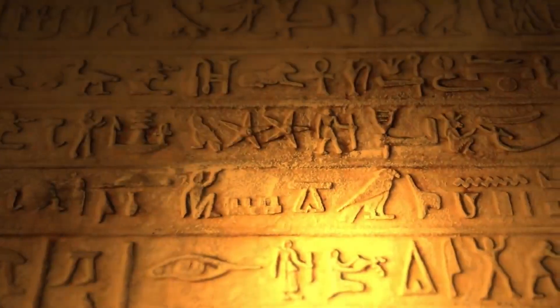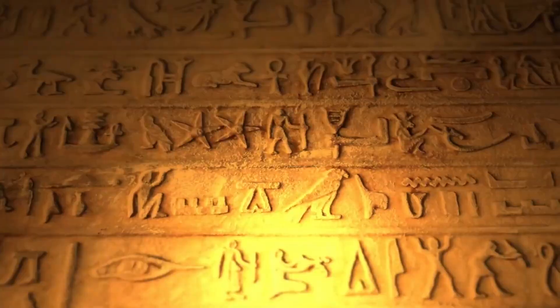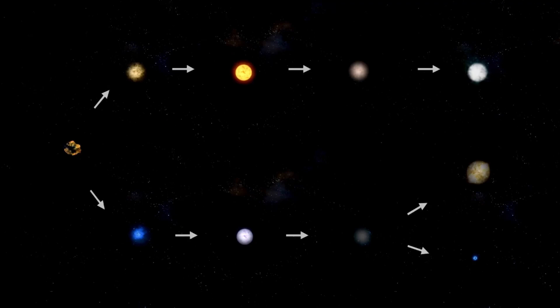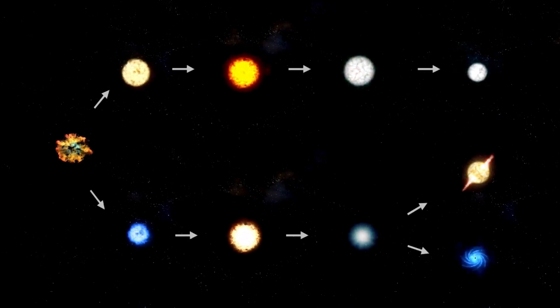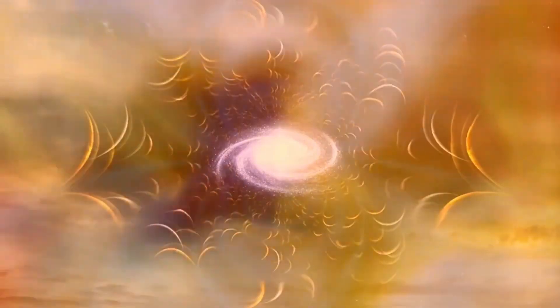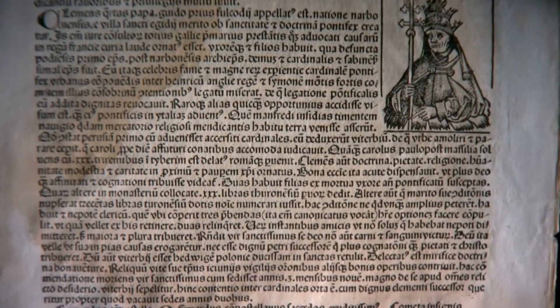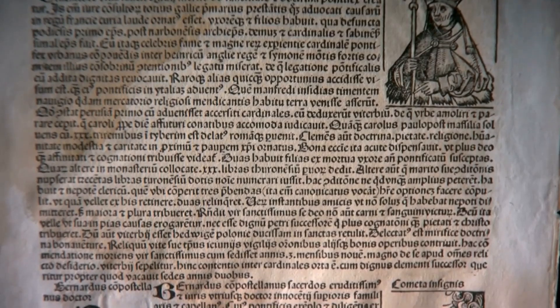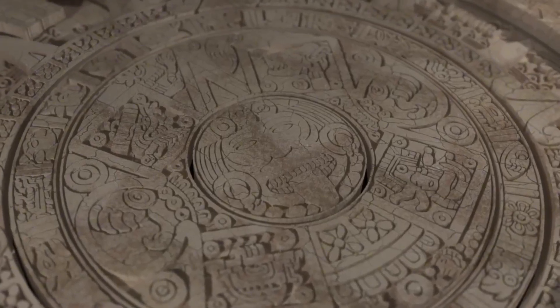The idea of an eternal cyclic universe isn't new. Ancient civilizations across the globe have long held beliefs that eerily align with modern cosmological theories. In Hinduism, the universe follows a grand cosmic cycle known as samsara. The universe is created, exists for billions of years, and is then destroyed, only to be reborn again. This eternal cycle is symbolized by the cosmic dance of Shiva, the god of destruction and transformation. The parallels between this ancient belief and modern cyclic universe theories are striking.